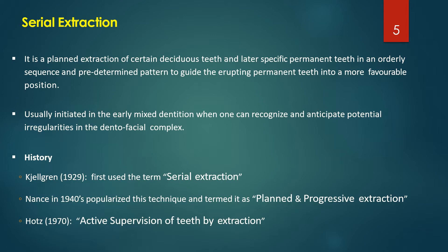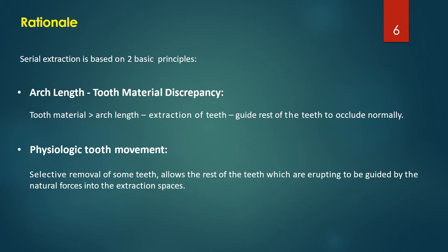It was called active supervision of teeth by extraction by Hotze in 1970. The rationale of serial extraction has two principles. First is arch length-tooth material discrepancy: if the tooth material is in excess compared to arch length, extraction is indicated to guide the remaining teeth to occlude normally. Second, if you see physiological tooth movement, you can selectively remove some teeth while allowing the rest to erupt into their natural spaces by natural forces.